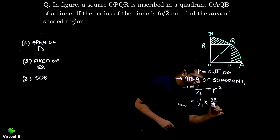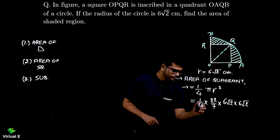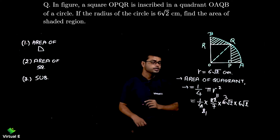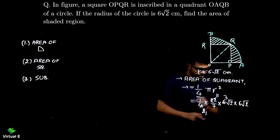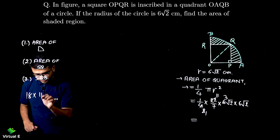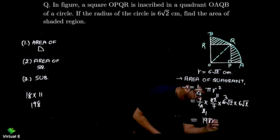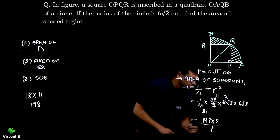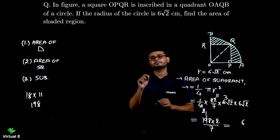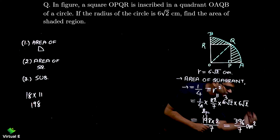So area of quadrant = (1/4) × (22/7) × (6√2)² . Multiplying: 6√2 × 6√2 = 36 × 2 = 72. Then (1/4) × (22/7) × 72. Simplifying: 11 × 18 = 198, and 198 × 2 = 396. So area of quadrant = 396/7 cm². Step 1 is done.